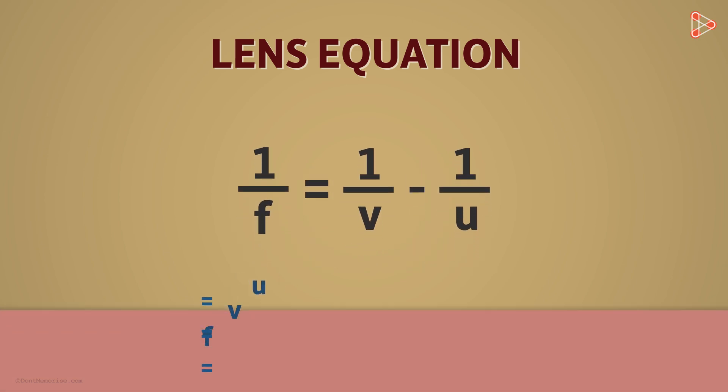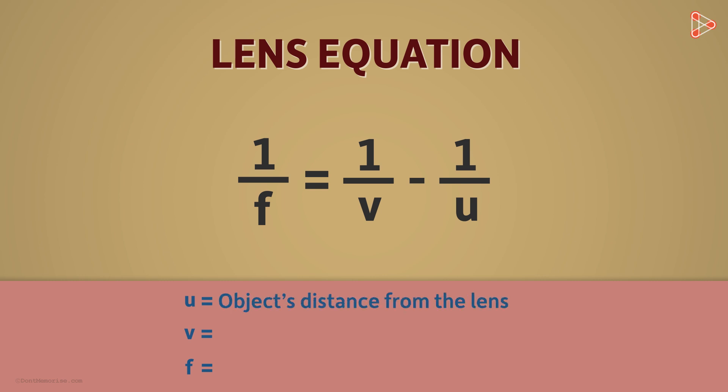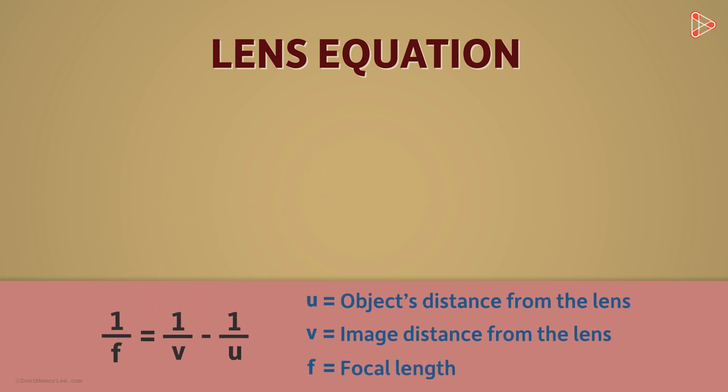In this equation, there are three unknown quantities. U represents the object's distance from the lens, V represents image distance from the lens, and F is the focal length.